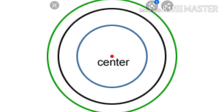The circles that have the same center but different radii are called concentric circles. Some examples of concentric circles are archery targets and the bull's eye on a dartboard.